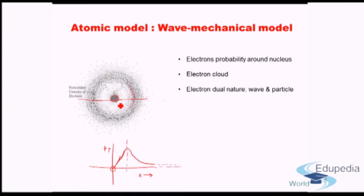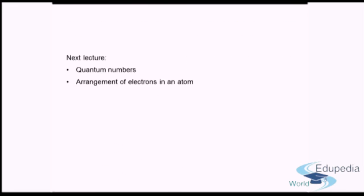The probability distribution of the wave mechanical model addresses the problem encountered in Bohr's model, where accelerated electrons should lose energy and spiral into the nucleus. This brings us to the end of the lecture on basic atomic structure — we discussed Bohr's model, the components of the nucleus, and the wave mechanical model. The next lecture will focus on quantum numbers, which give the address of each electron in the atom, and then we will see how the arrangement of electrons is actually done.